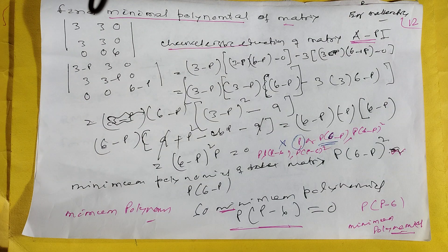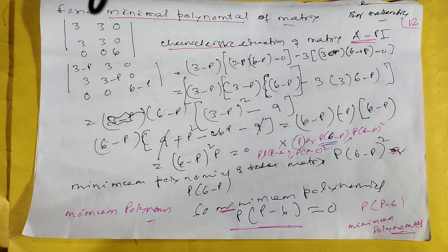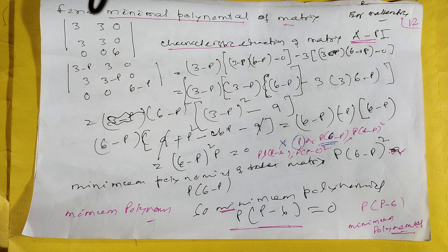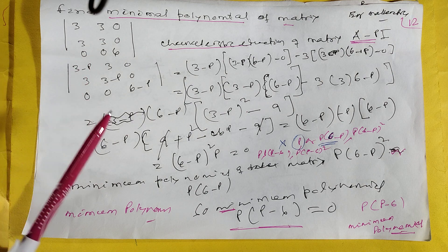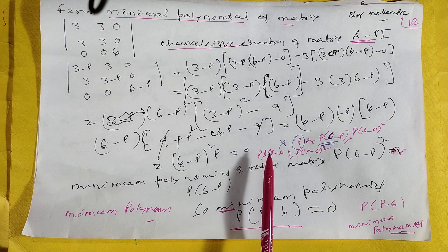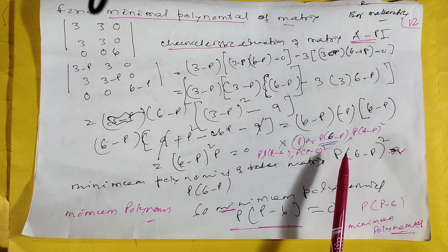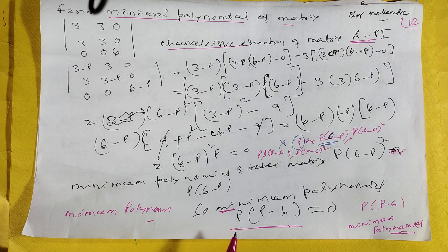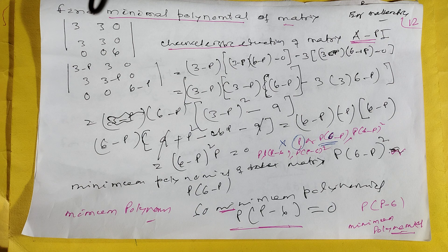This is a mathematics engineering mathematics problem. You have to calculate the characteristic equation. If you solve it, the equation coming p(p minus 6), p into (p minus 6) whole square. Automatically which is telling the minimal polynomial, that is p into (p minus 6).